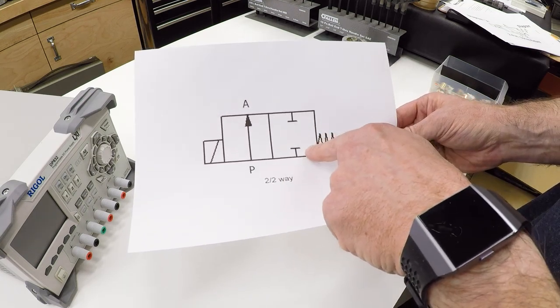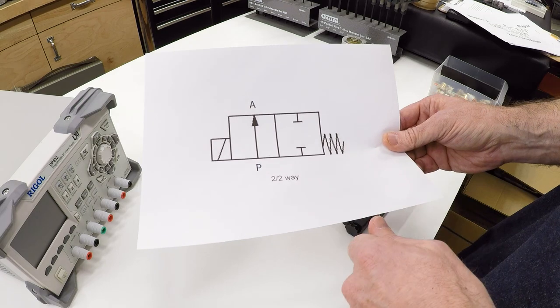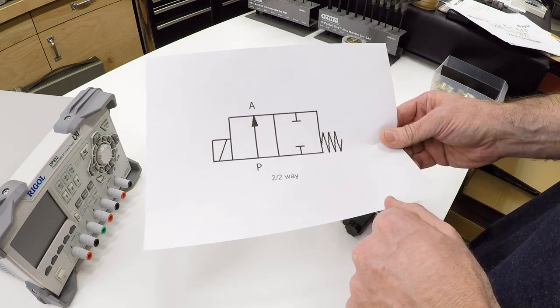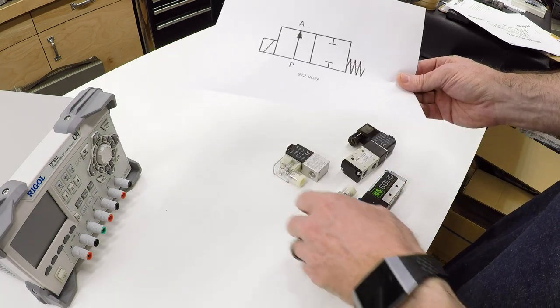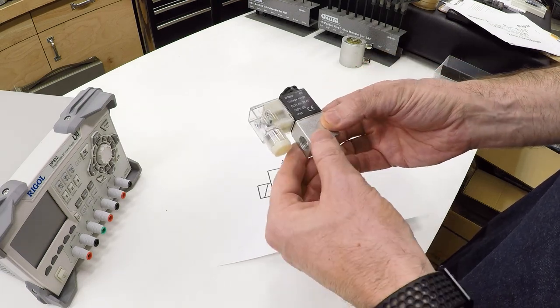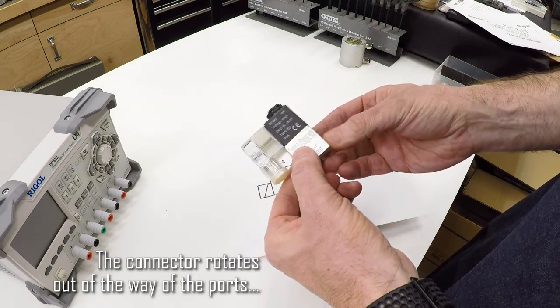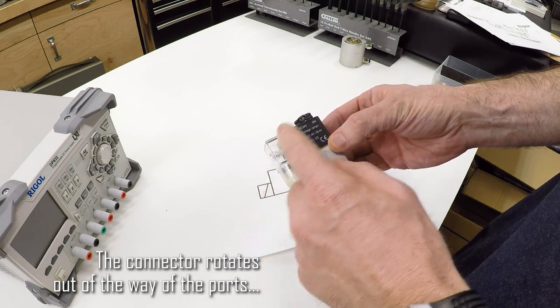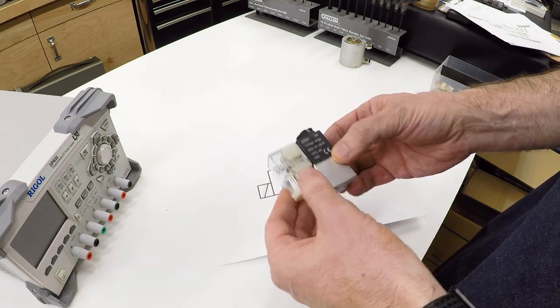When the solenoid is turned off, the spring returns the valve to this state where it's completely blocked. This is the simplest valve you're going to see. You connect your air inlet to the in port and the outlet to the out port, and when you turn on the current, the air flows. When you turn off the current, it stops.